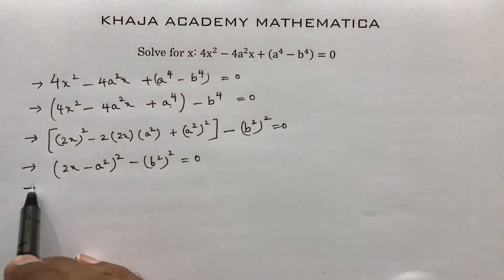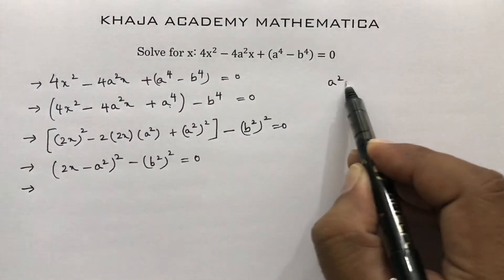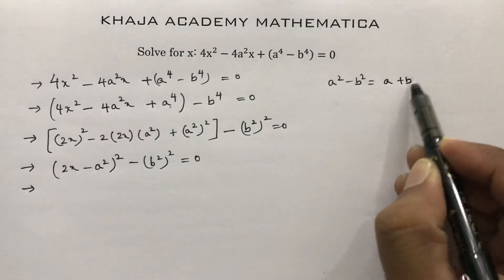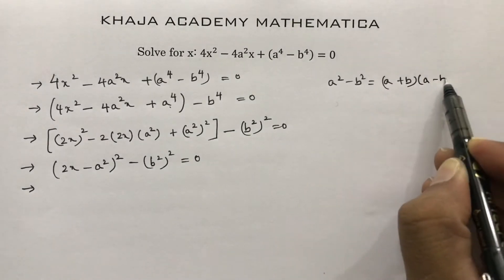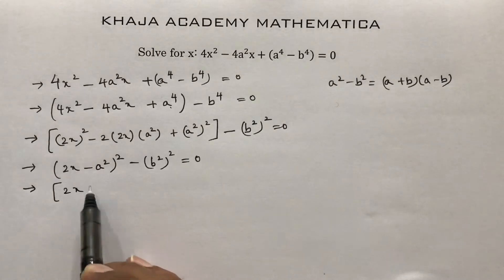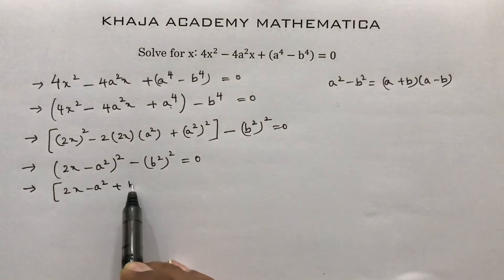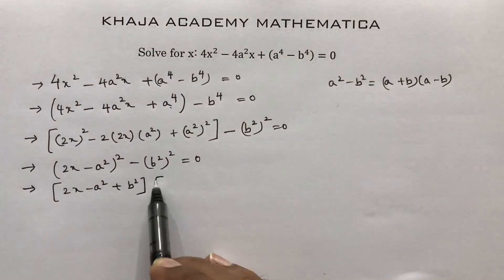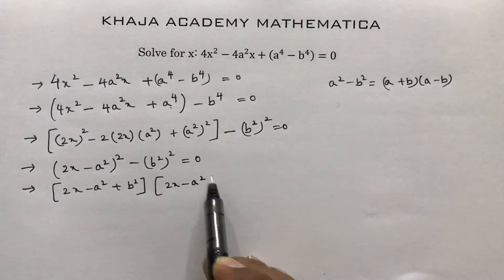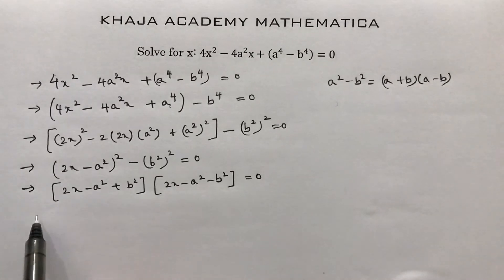Now we apply the identity a² - b² = (a + b)(a - b). So here a is (2x - a²) and b is b², giving: (2x - a² + b²)(2x - a² - b²) = 0.